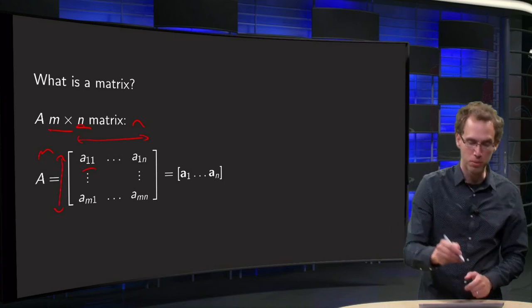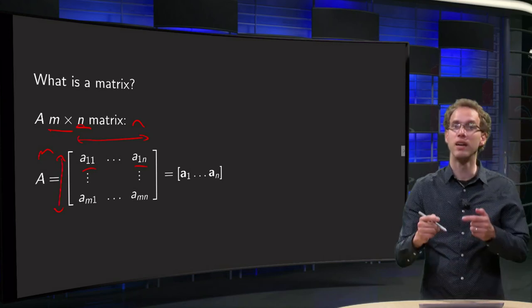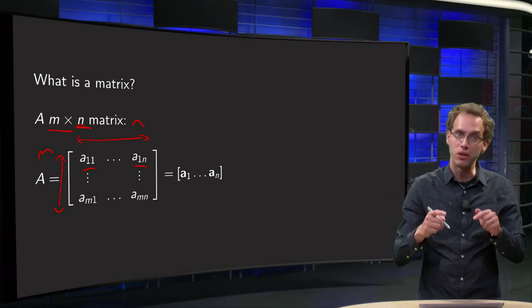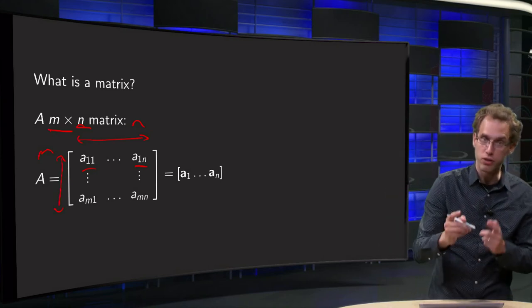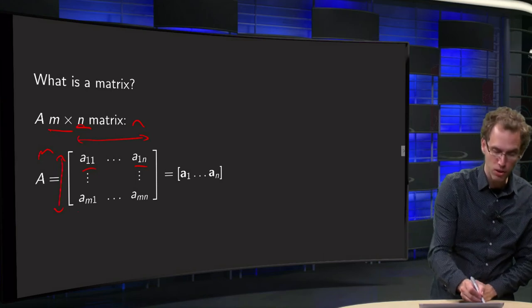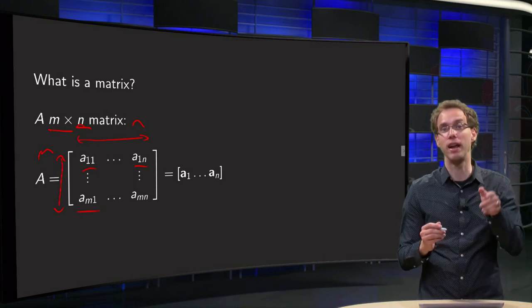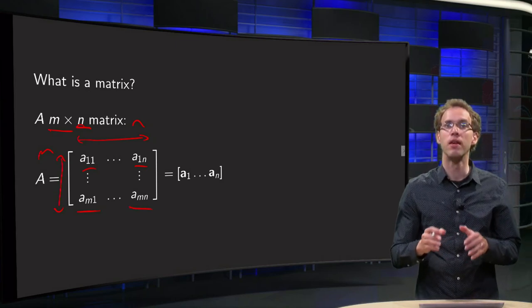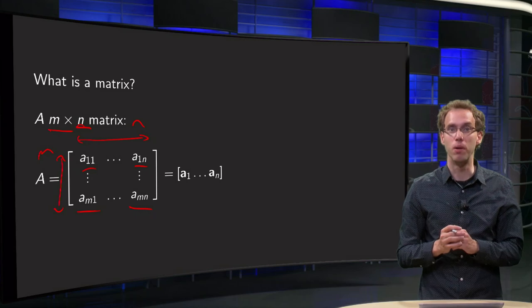Then we go to the second row and the third row and so on until the last row. The last row we start with am1 and then am2, am3 up till amn. So that's how you can write down a matrix.